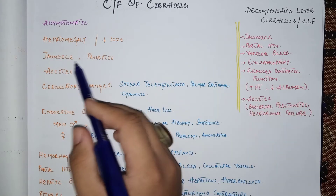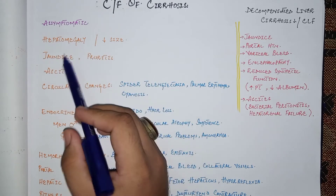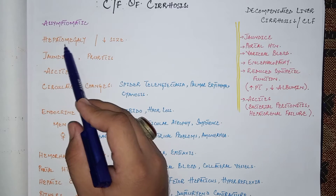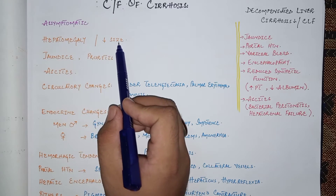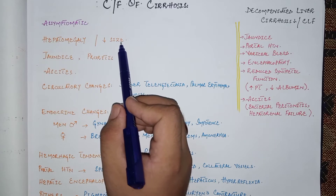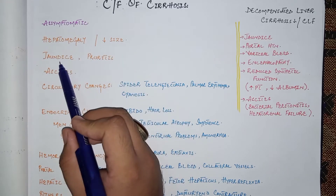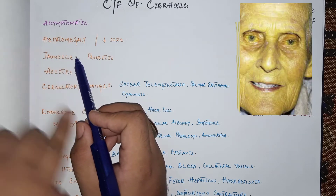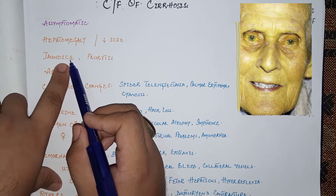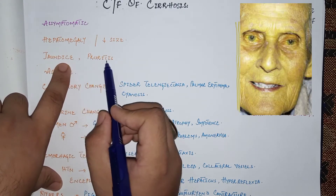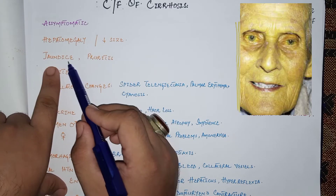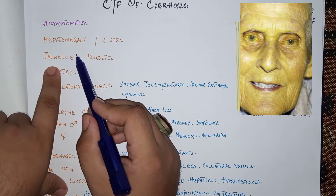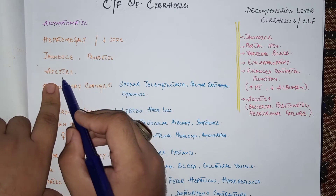Regarding the clinical features of cirrhosis: some patients are asymptomatic. Hepatomegaly is common in alcoholic cirrhosis, while a reduced liver size is seen in chronic viral hepatitis. Jaundice occurs due to hyperbilirubinemia from impaired bilirubin excretion, and pruritus or skin itching accompanies hyperbilirubinemia. Note that jaundice is yellowing of the skin while icterus is yellow discoloration of the sclera.